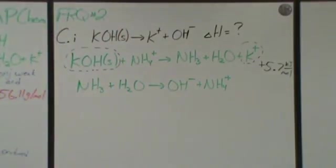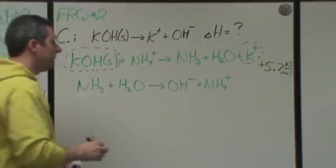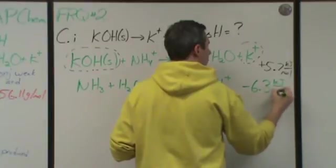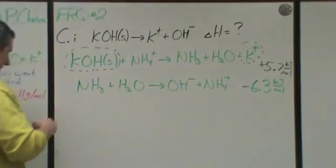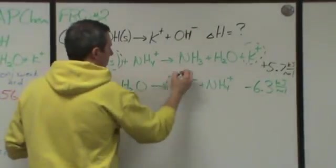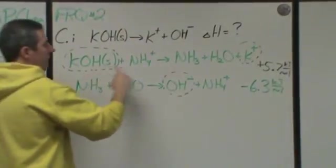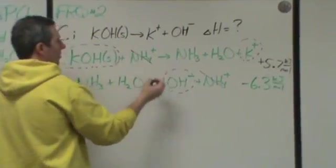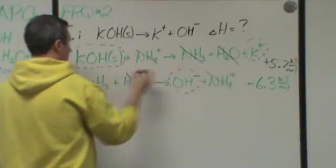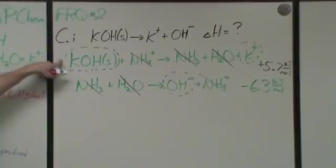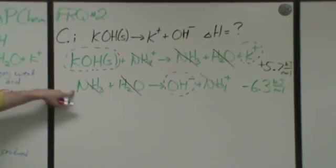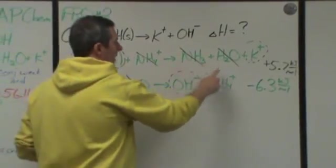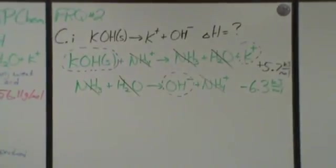So that second reaction they do, it said originally it was positive 6.3 kilojoules per mole. But because I reversed it, that's going to turn that into a negative value, negative 6.3 kilojoules per mole. Now if you watch, what I can do is take everything I want in my final reaction: this solid, this aqueous, and this aqueous component, and everything else will cancel. This will go, reactant and product. This will go. This will go. What that means is if I add this first reaction to the reverse of the second reaction, I will end up with the reaction I'm seeking in terms of chemicals.